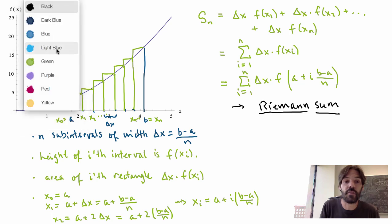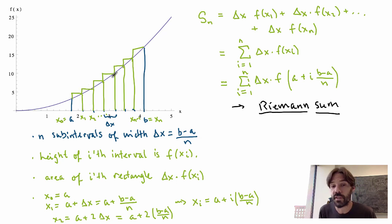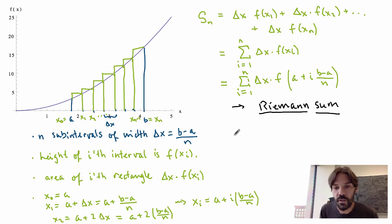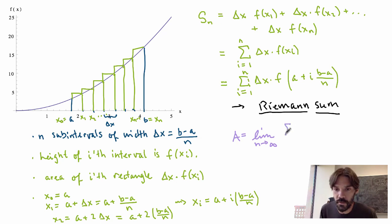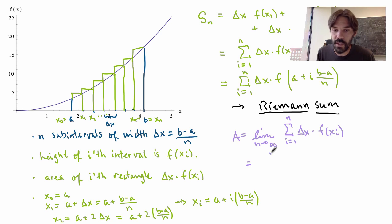But what we want is more than just an approximation — we want a precise expression for the area under the curve. We can achieve this by taking delta x to be infinitesimal, meaning very many very thin rectangles, so our approximation becomes exact. If we take the limit as n goes to infinity of the Riemann sum Sₙ — that is, the limit as n→∞ of the sum from i=1 to n of delta x times f(xᵢ) — we get a precise expression for the area.